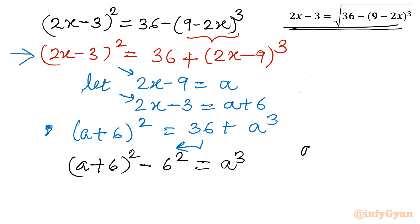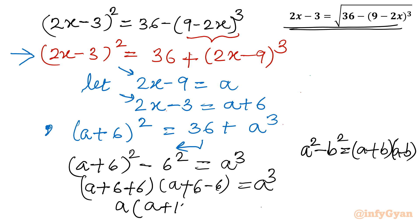Now difference of two squares: a square minus b square equals a plus b times a minus b. Let's apply here. So a plus 6 plus 6, and a plus 6 minus 6, equal to a cube. The result is a plus 12 times a, so a times a plus 12 equal to a cube.